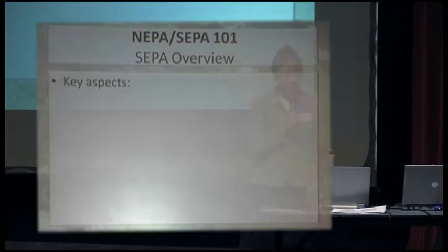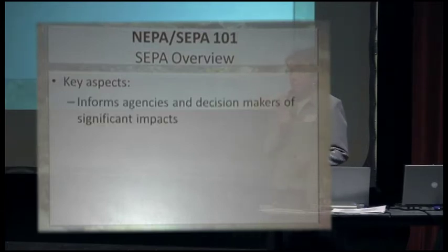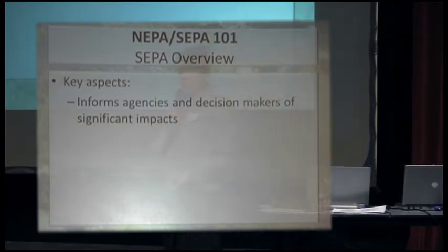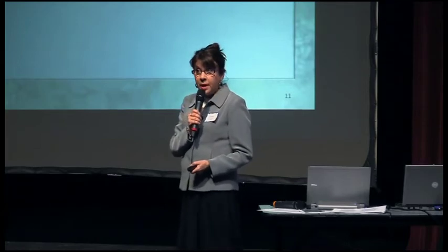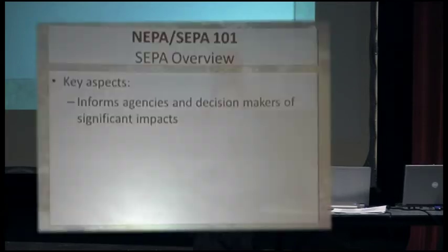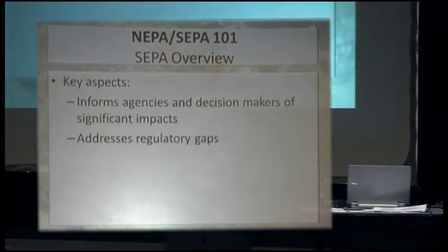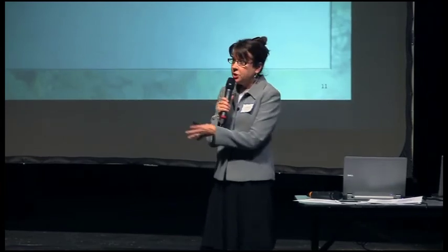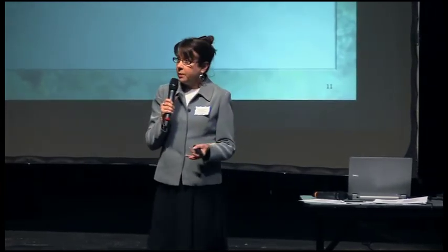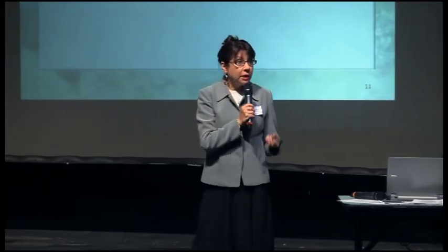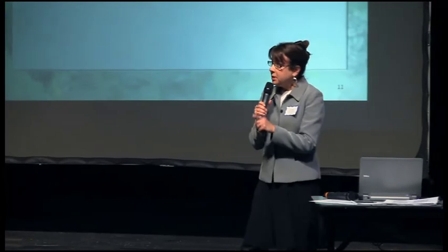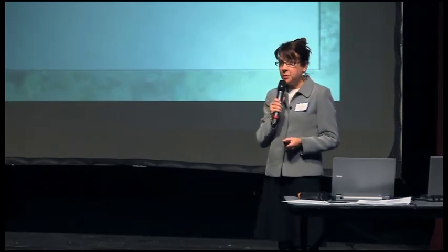The key aspects that come out of NEPA and SEPA is a document that's going to inform the agencies, decision-makers, and the public in terms of the significant impacts of a proposal — something you can look at and see a comprehensive list of what the impacts could be associated with the project. It also addresses regulatory gaps. Prior to NEPA and SEPA, we had various permits from a number of agencies tied to specific issues like wetlands or stormwater, but there were still gaps not being caught or analyzed in any sort of comprehensive review — and that's what SEPA and NEPA provided.